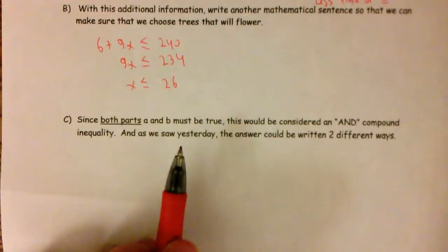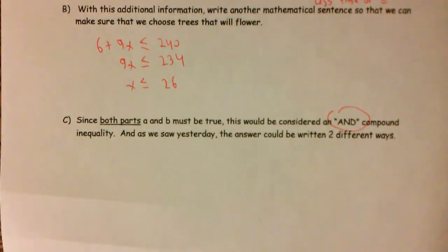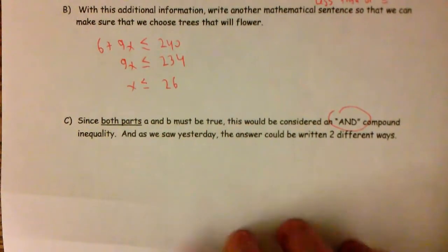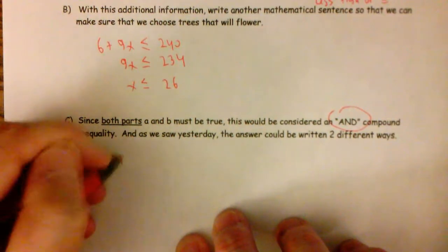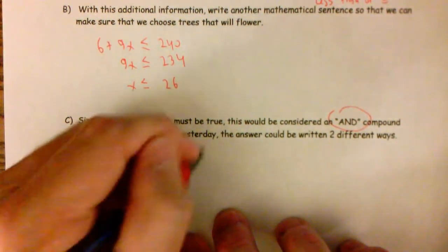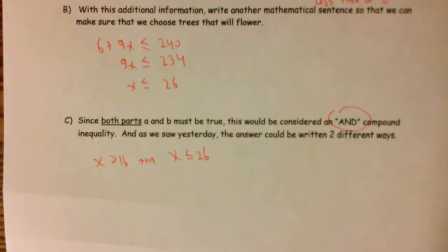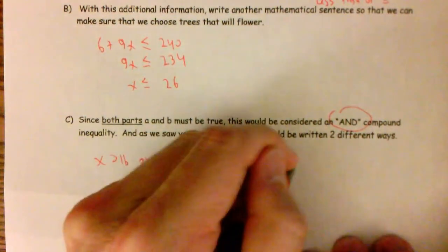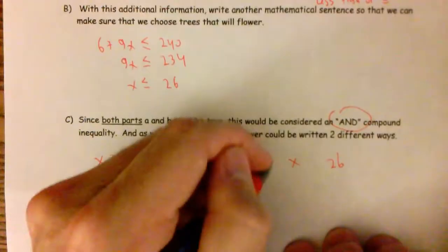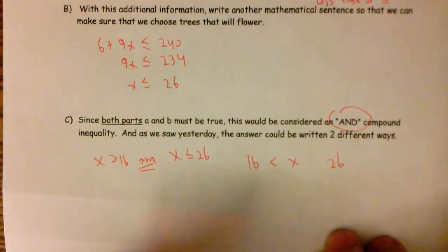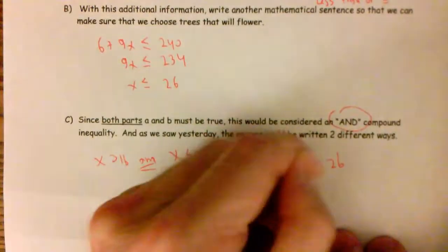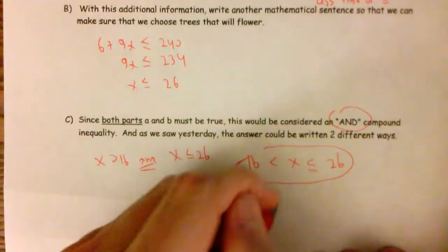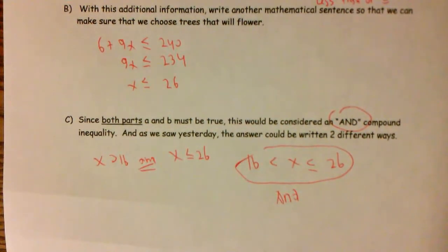All right. Last thing here, guys. Sorry about this. Since both parts A and B must be true, this would be considered an and compound inequality. And as we saw yesterday, the answer could be written two different ways. We could write it as the two inequalities: X is greater than 16 and X is less than or equal to 26. And that would be one of our solutions. So the trees need to be greater than 16 years old but less than or equal to 26 years old. Or we can write an and inequality like this by putting the smaller number, the X, the 26, and saying X is greater than 16. Again, see how we flipped it around because we flipped which side the X was on. But less than or equal to 26. This is an and inequality. An and inequality being between two numbers, right?